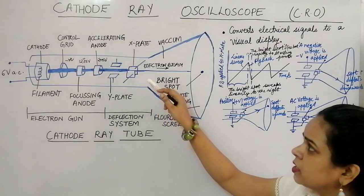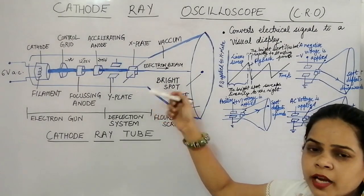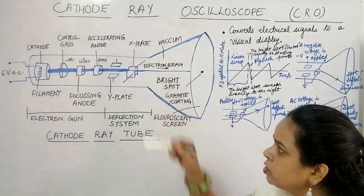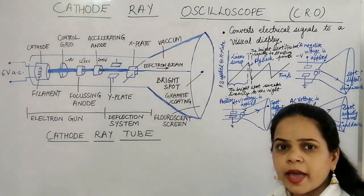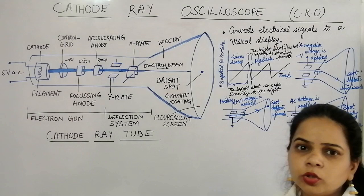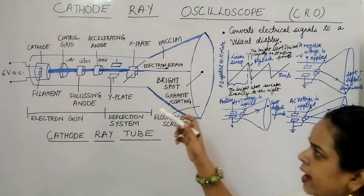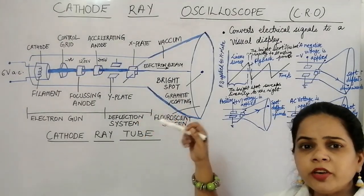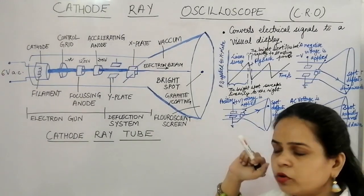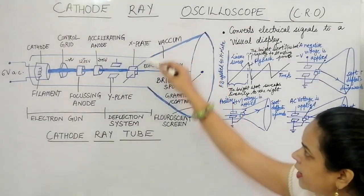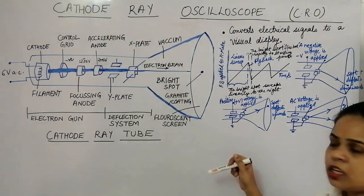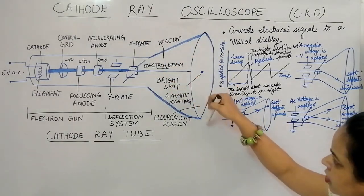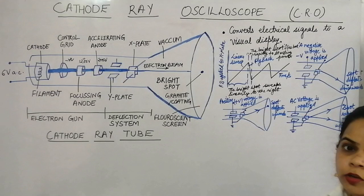By changing the voltage on the X and Y plates, we can change the position where the electrons strike the fluorescent screen. Depending on whether we apply voltage to the Y plate, X plate, or both, the electron beam will strike the screen at a corresponding position.